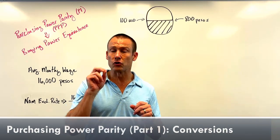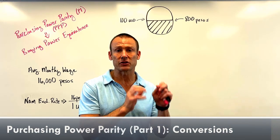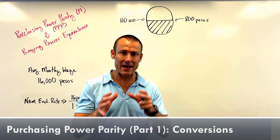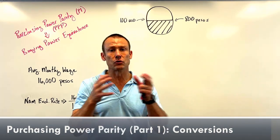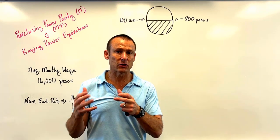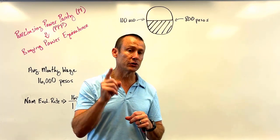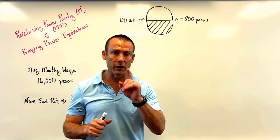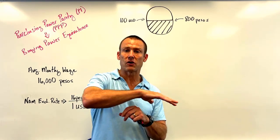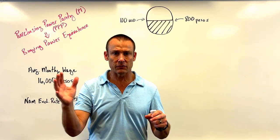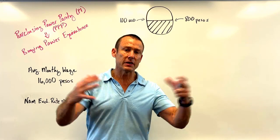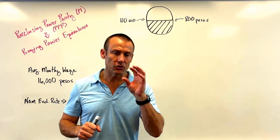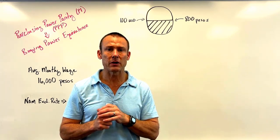The two uses of the purchasing power parity exchange rate: number one is to convert data that's in other currencies into some common currency that people understand, which is usually USD. So one use of purchasing power parity is to convert international data — in all kinds of currencies — into a common currency, usually the USD.